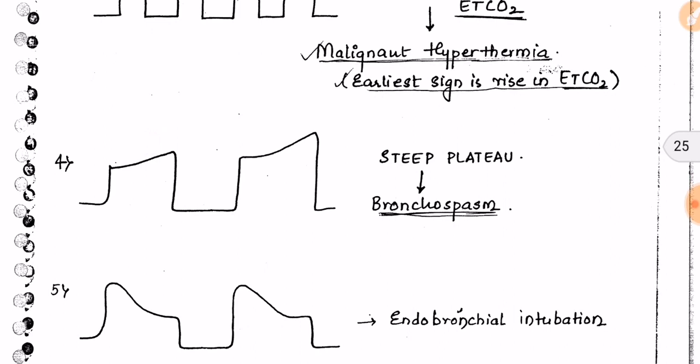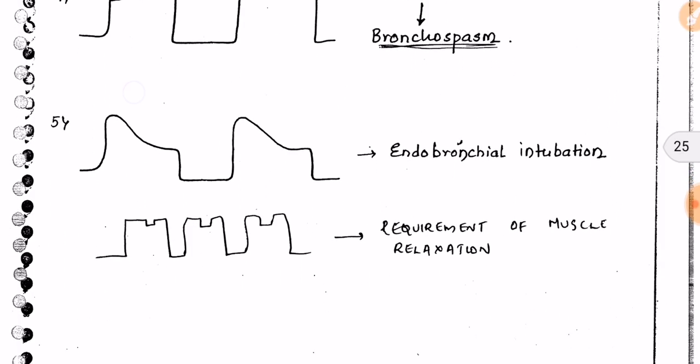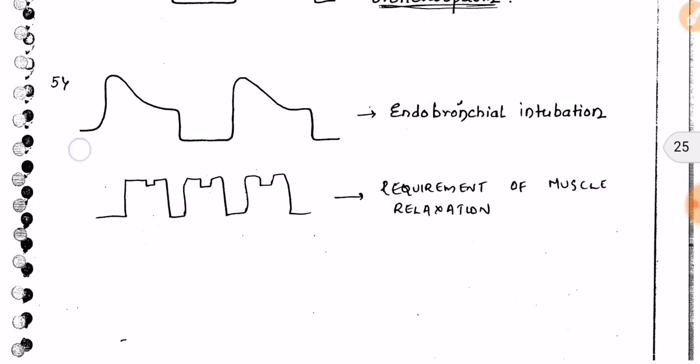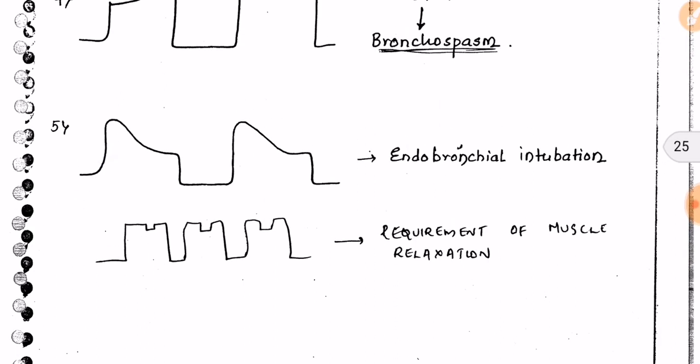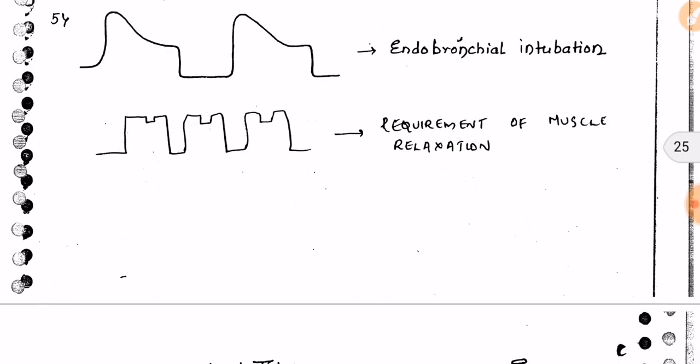If we see a steep plateau on the capnogram — rather than the normal flat plateau — that indicates bronchospasm. For endobronchial intubation, there is a characteristic capnogram pattern showing it. If the graph shows a requirement-of-muscle-relaxation pattern, we give muscle relaxants to the patient.